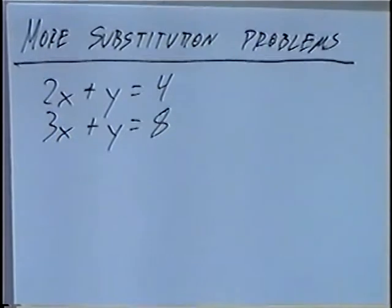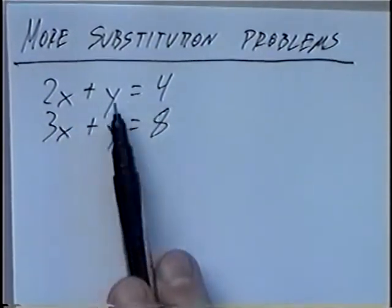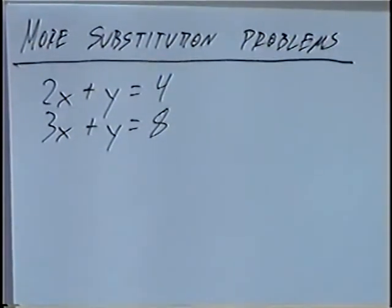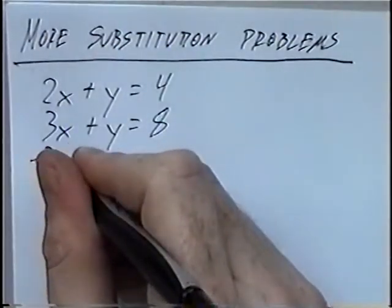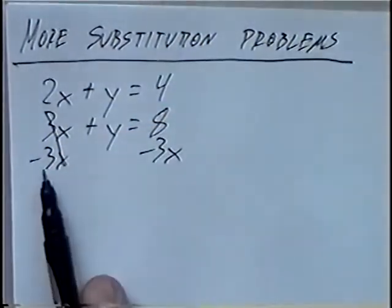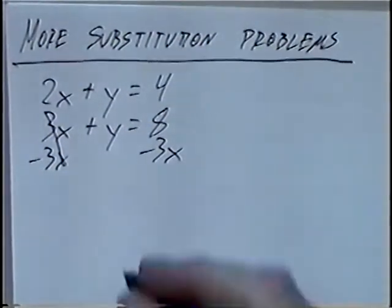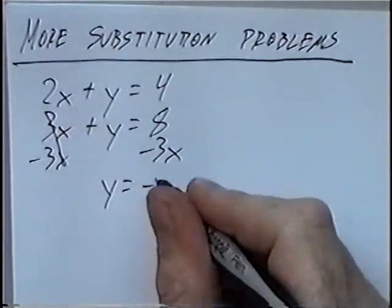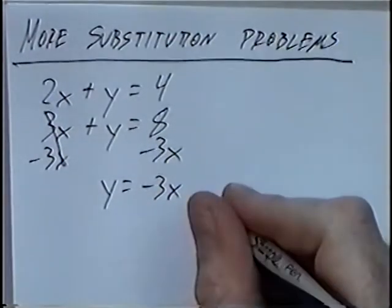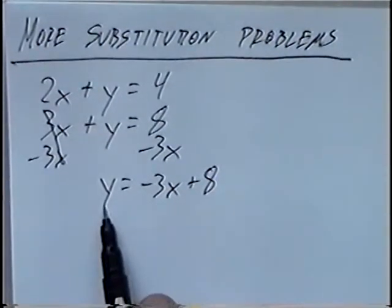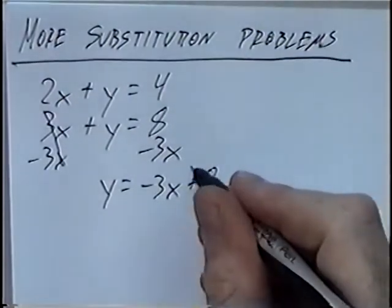To solve this by substitution, you want to isolate one variable first, so you have either y equals or x equals. You could subtract 3x from the second equation so that the 3x cancels and you have y by itself. So y would equal negative 3x plus 8.